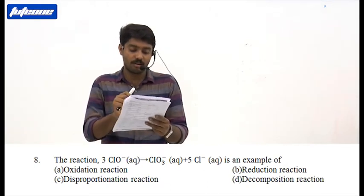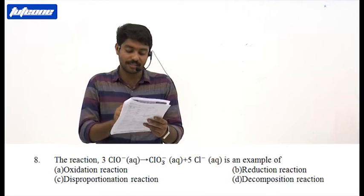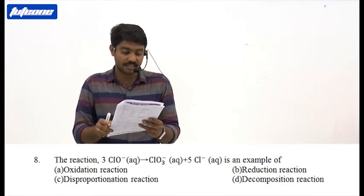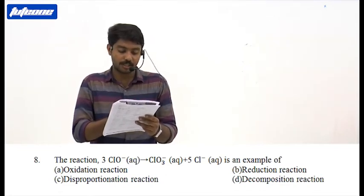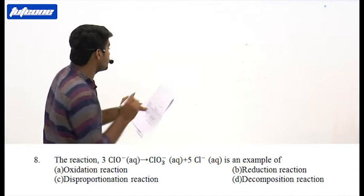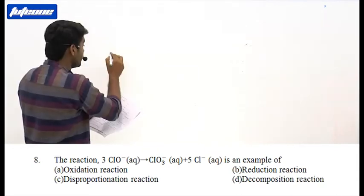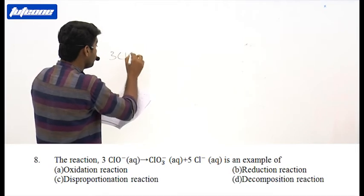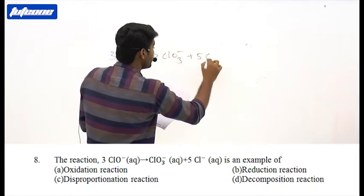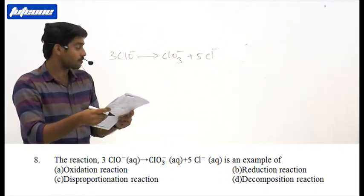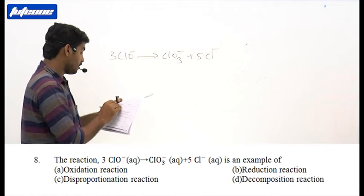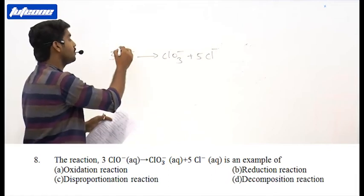The reaction 3ClO⁻ (aqueous) gives ClO₃⁻ (aqueous) plus 5Cl⁻ (aqueous). Is this an example of: A) oxidation reaction, B) reduction reaction, C) disproportionation reaction, or D) decomposition reaction? The equation is 3ClO⁻ gives ClO₃⁻ plus 5Cl⁻. In ClO⁻, chlorine has a plus 1 oxidation state.